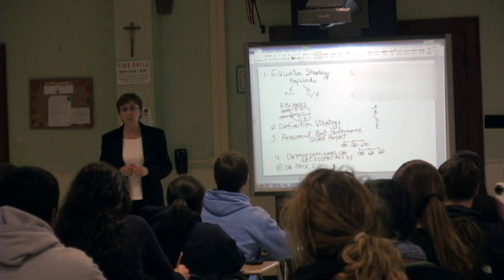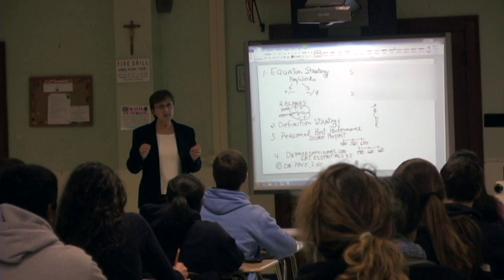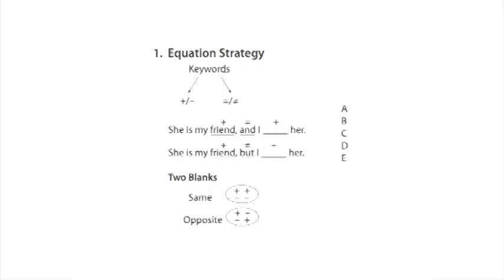The best you can do is know the right answer. But if you don't, you want to eliminate as many wrong answers as you possibly can. And on the SAT, if you can eliminate at least one answer, you guess. Otherwise, you don't.